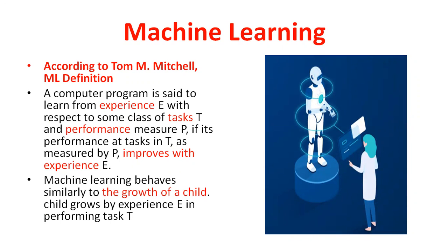According to Tom Mitchell, a computer program is said to learn from experience E, with respect to some class of task T and performance measure P — that means it takes experience E, task T, and performance P. If its performance at task T as measured by P improves with experience E, that is the definition of machine learning.